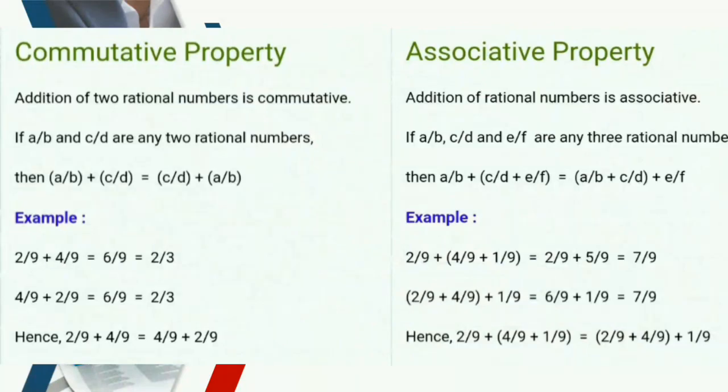Commutative property. Addition of 2 rational numbers is commutative. For example, 2 upon 9 and 4 upon 9.